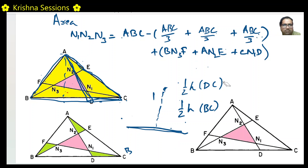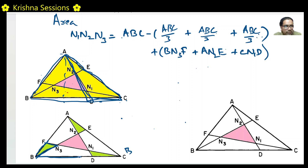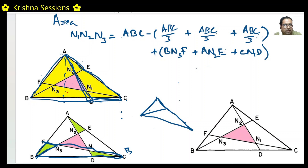We will use exactly the same methodology for the green triangles. Let us look at triangle BN3F versus triangle BCF. Take line CF as the base. From point B to line CF there is only one perpendicular. The same perpendicular H is shared by both triangles BN3F and BCF.